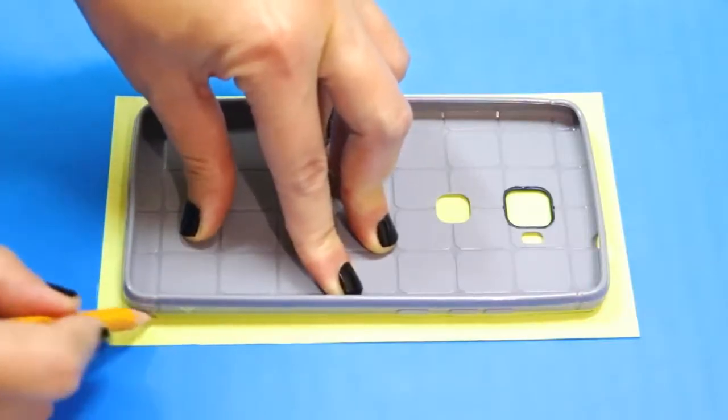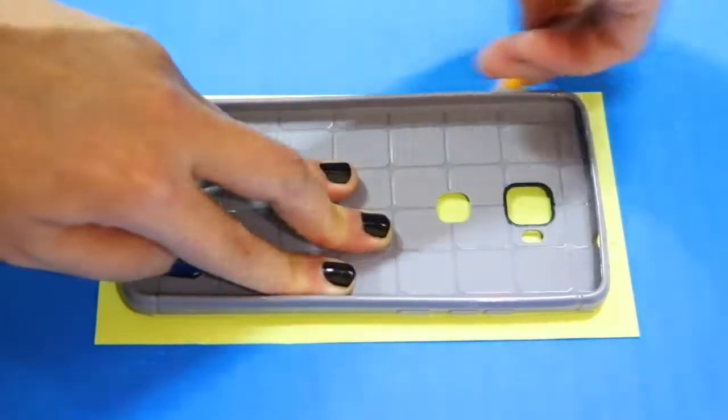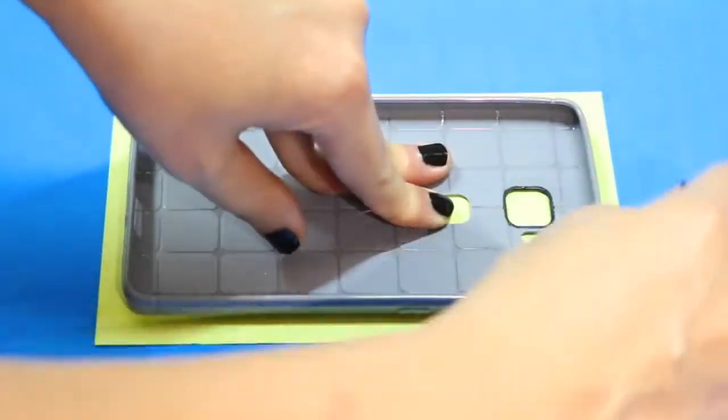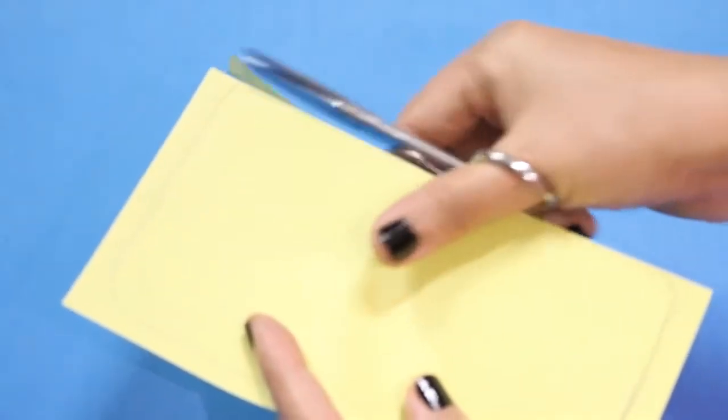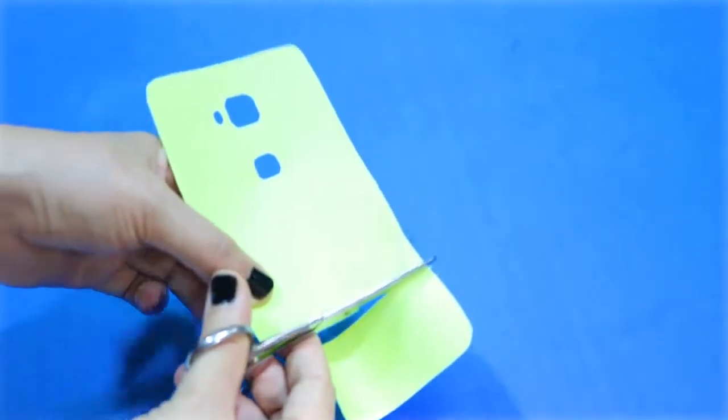It's best if you use a white case because it will look more like the white sole of the shoe. However, since I only have this gray case, it will have to do. Cut the template out and then cut off the bottom part of it like so.